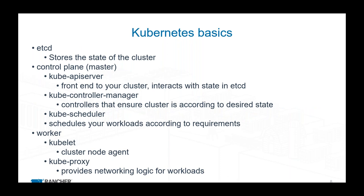Long story short, Kubernetes is really built on three main areas: etcd, the database control plane which manages Kubernetes, and the worker plane where your actual applications are running. We're going to follow this order because starting from the top down, they all rely on the components above them.